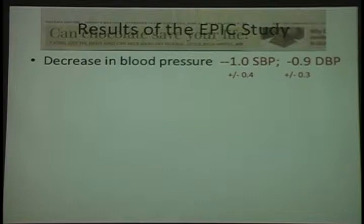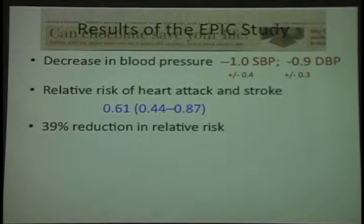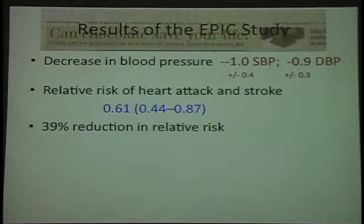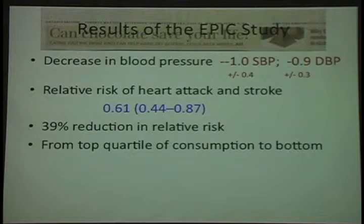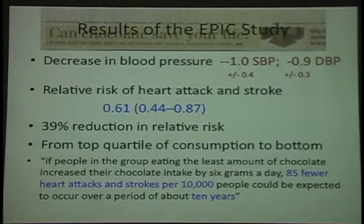They also looked at risks of heart attack and stroke and reported a relative risk of 0.61 — a 39% reduction with high-end dark chocolate consumers (6 grams) versus low-end (1 gram). That confidence interval from 0.44 to 0.87 reflects the range of risk reduction. If the risk was one, there'd be no difference between groups. As they described it: if people eating the least chocolate increased intake by 6 grams a day, 85 fewer heart attacks and strokes per 10,000 people could be expected over 10 years — small, but a real reduction.